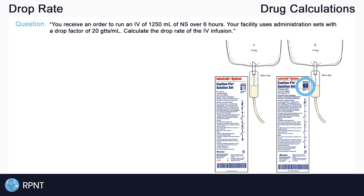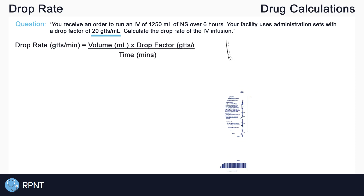For this question, our drop factor is 20 drops per mL. The question is asking us to find the drop rate, so we'll need our drop rate equation: drop rate in drops per minute equals the volume of the order in milliliters multiplied by the drop factor in drops per mL, all divided by the time of infusion in minutes.